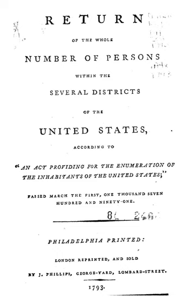OMB defines the concept of race as outlined for the U.S. Census as not scientific or anthropological, and takes into account social and cultural characteristics as well as ancestry, using appropriate scientific methodologies that are not primarily biological or genetic in reference. The race categories include both racial and national origin groups. Race and ethnicity are considered separate and distinct identities, with Hispanic or Latino origin asked as a separate question.